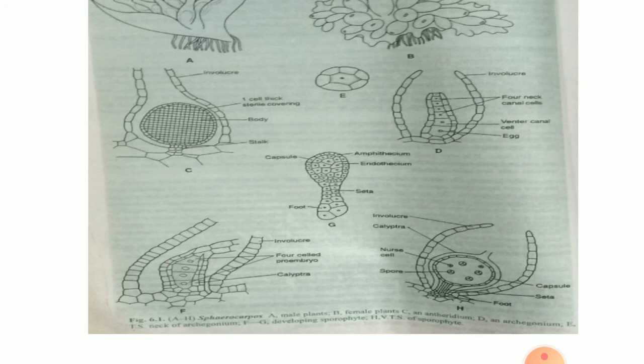The sporophyte of Sphaerocarpus is divided into foot, seta, and capsule. The foot is small, slightly bulbous, and is found embedded in the gametophytic thallus. It functions to absorb food from the gametophytic thallus and to fix the sporophyte within the female involucre. The seta is very small, which connects the foot on one hand and the capsule on the other hand. The seta of Sphaerocarpus never elongates and always remains only a few cells in height.